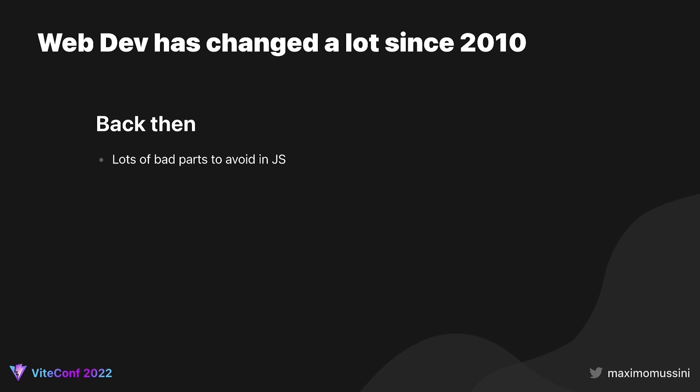Before diving into what Vite.js can do, let's consider how much the ecosystem has changed over the past 10 years. Back then, JavaScript was a gnarly language with lots of bad parts to avoid. Organizing your JavaScript code was a difficult task as the language didn't have any primitives to split code into modules. Bundling was about concatenating files, so ensuring a proper load order was the developer's responsibility, with some tools like Sprockets providing aid to avoid duplicates.